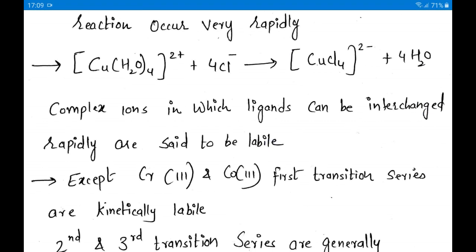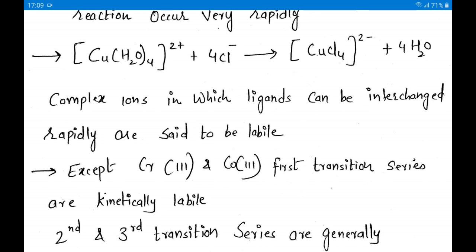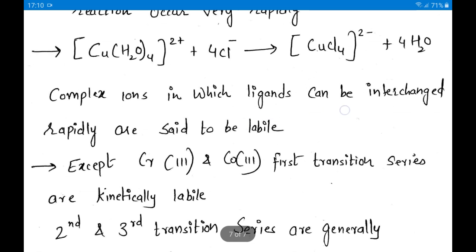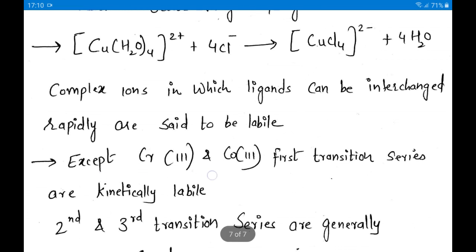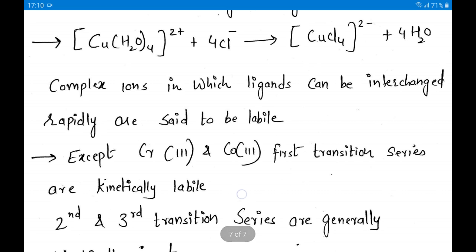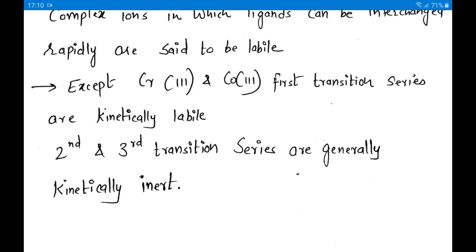Another example: CuH2O4 2+ reacted with Cl minus gives CuCl4 2 minus. Complex ions in which ligands can be interchanged rapidly are called labile. Except Cr3+ and Co3+, all first transition series metals are kinetically labile. The second and third transition series (4D and 5D) are generally kinetically inert — their ligands do not change frequently.